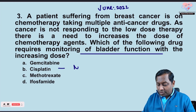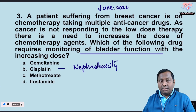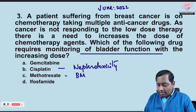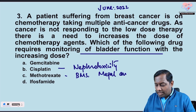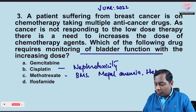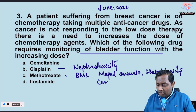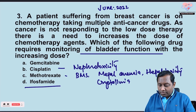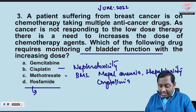Bone marrow suppression and megaloblastic anemia are mainly associated with methotrexate. Hepatotoxicity and crystalluria are also associated with methotrexate. But ifosfamide — remember — ifosfamide and cyclophosphamide can cause hemorrhagic cystitis. This is a very common problem.